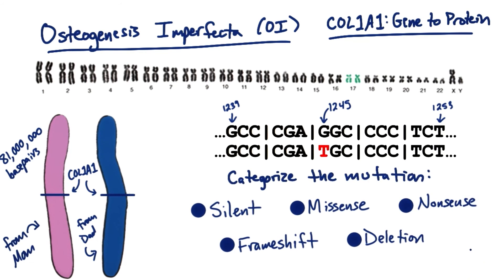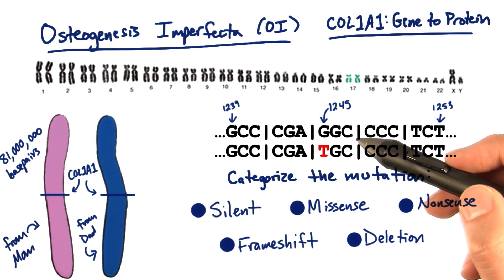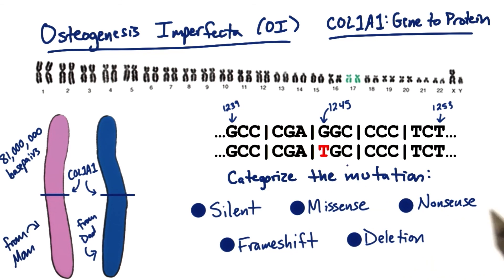Using the genetic code, which we learned about in lesson 3 and which you can find in the instructor's notes on this page, I want you to determine the expected amino acid change from the top to the bottom sequence, and then select the type of mutation that best categorizes this change to the T allele. If you have any trouble answering this, you might want to go back and review mutations from lesson 6.